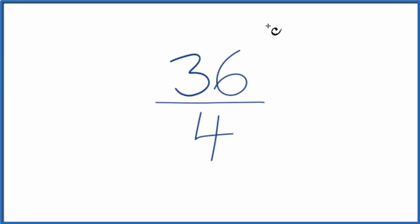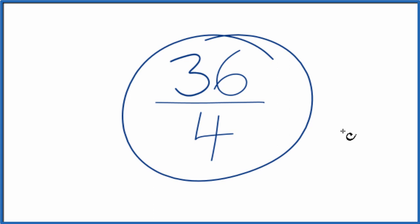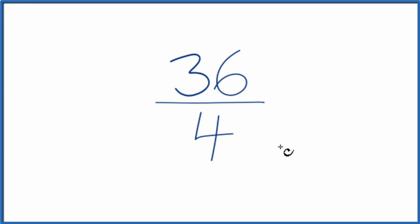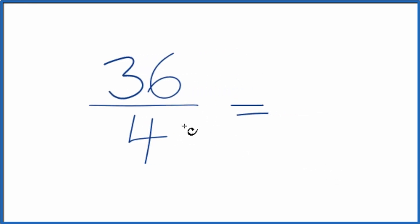If you need to simplify the fraction 36 fourths, here's how you can do that. What we're doing is trying to find another fraction that's equal — it's equivalent, it has the same value as 36 over 4 — just that we've simplified it or reduced it down to lowest terms.